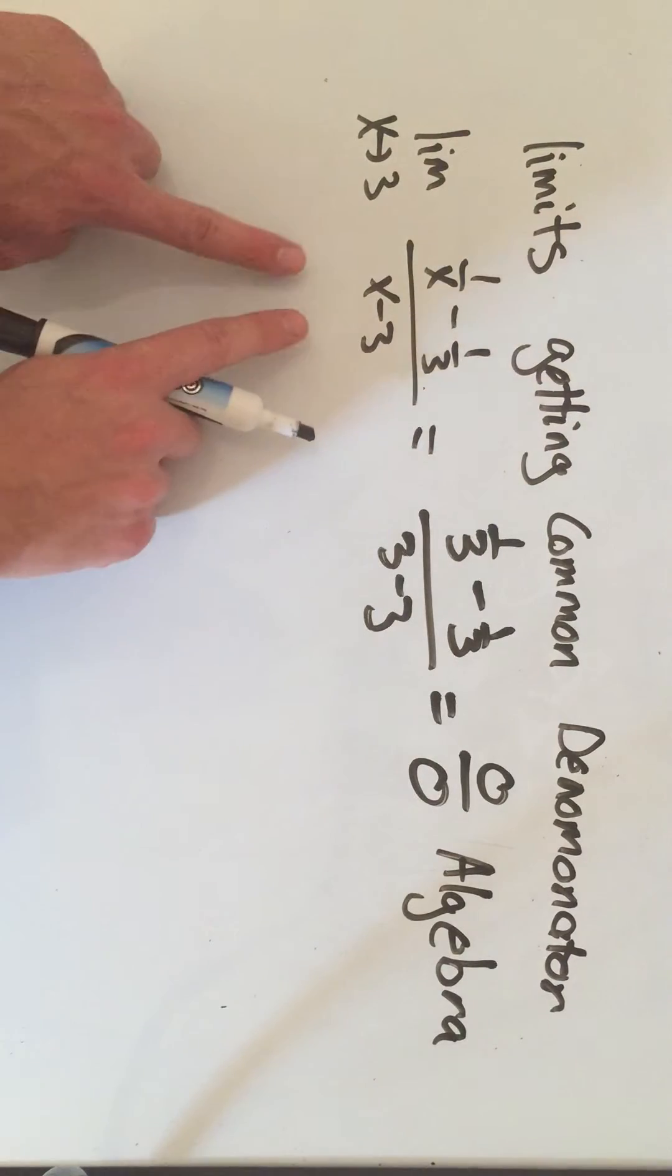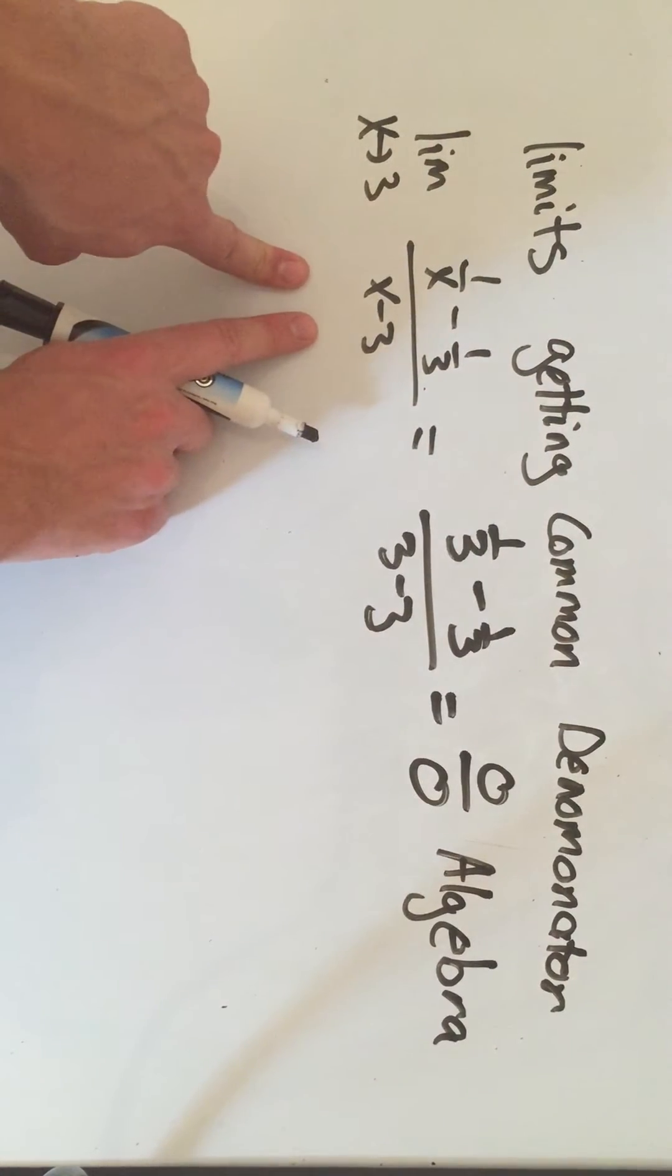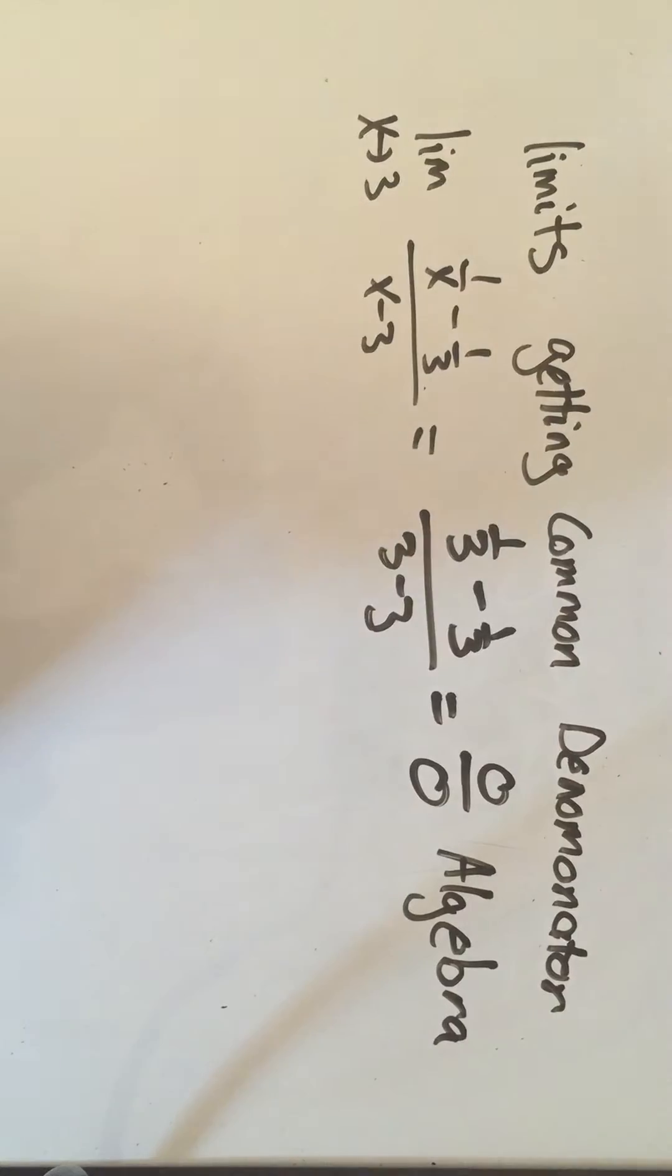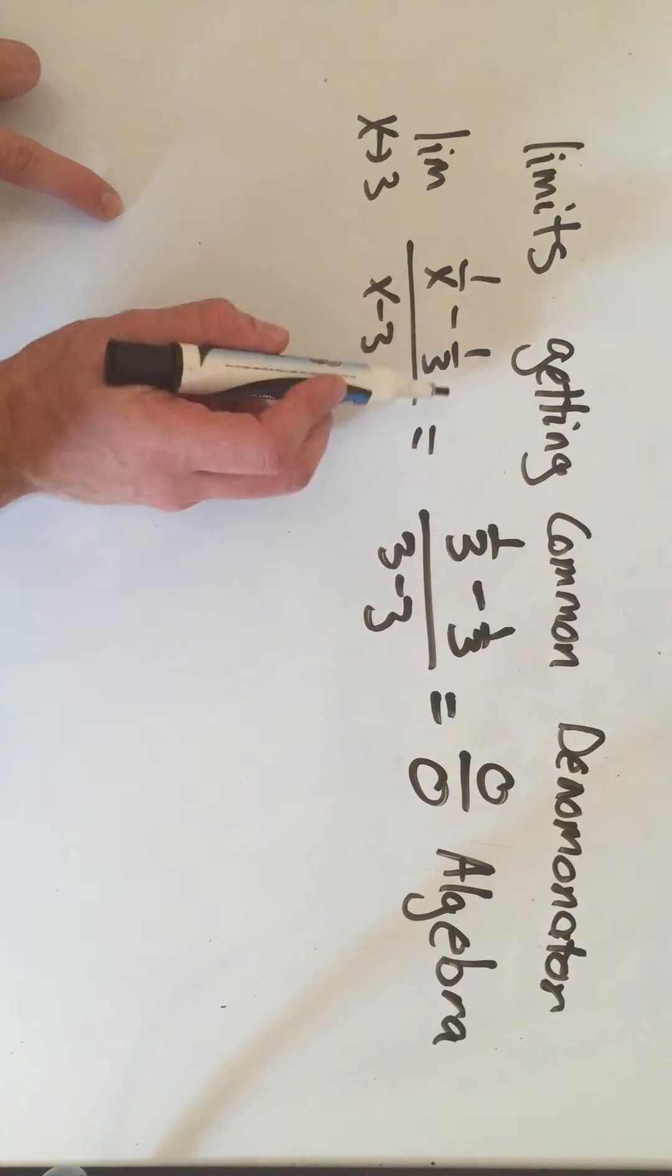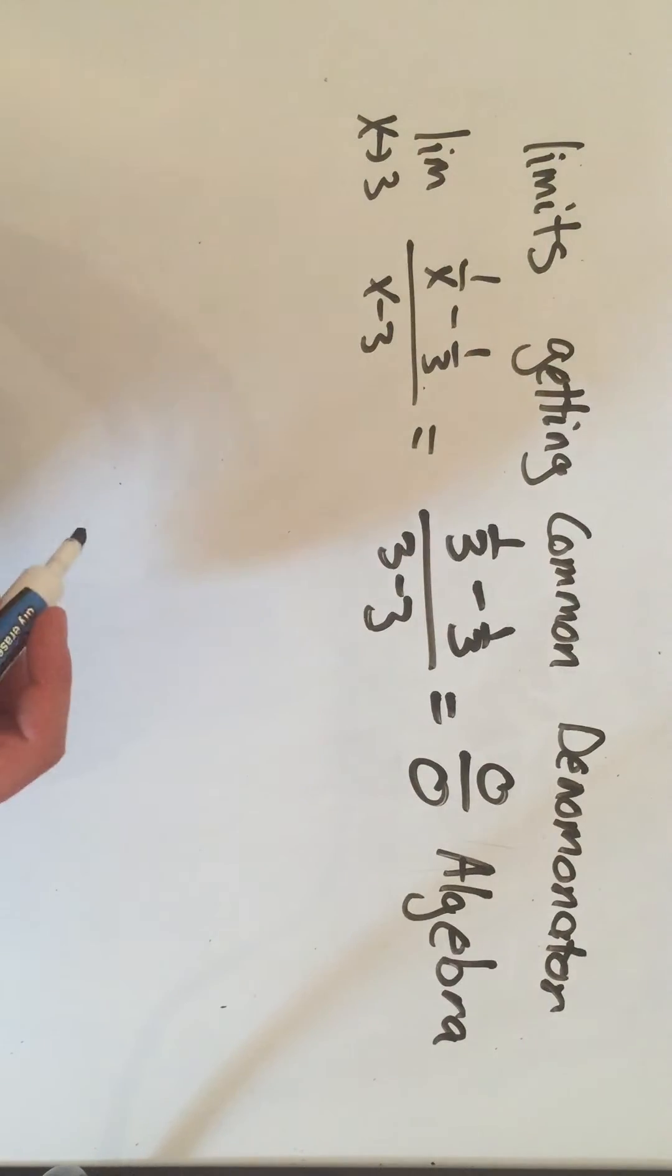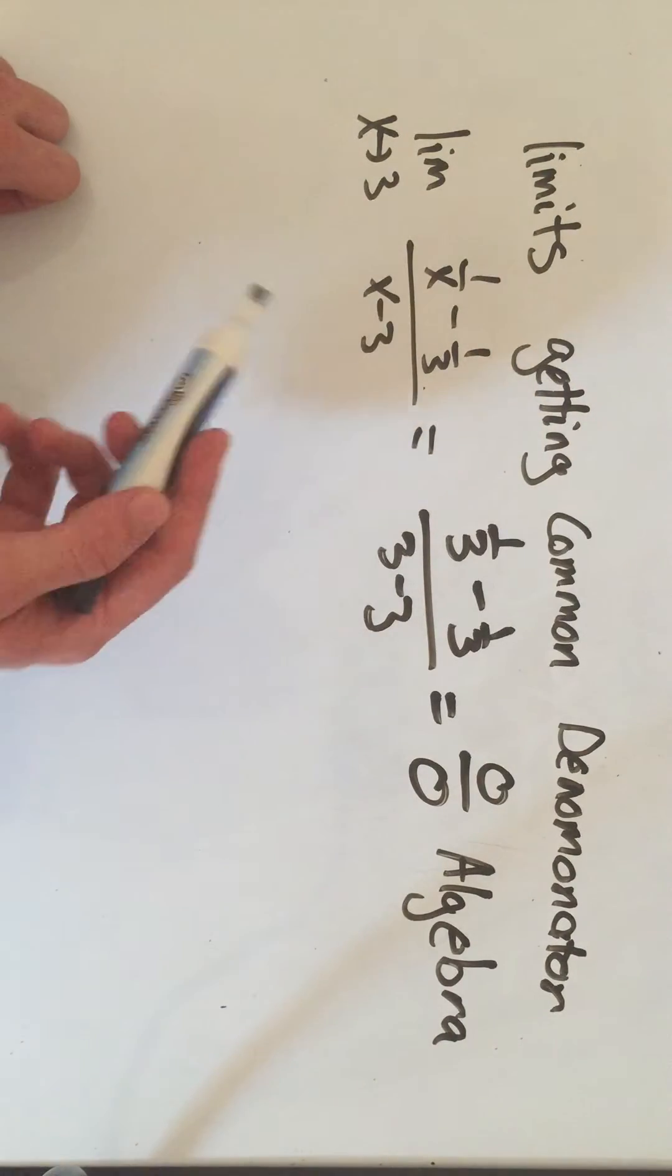Okay, now what algebra technique am I going to use on this? I see two fractions on the top. That means I want to get a common denominator. So I want to combine these two fractions into one. And I do that by cross-multiplying. I'll show you what I mean.